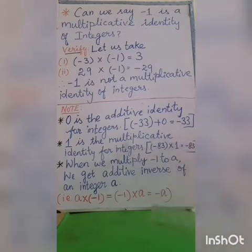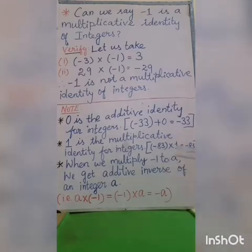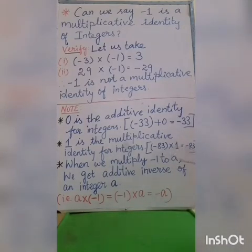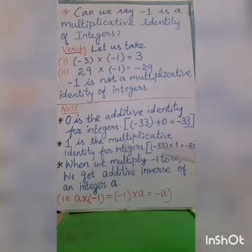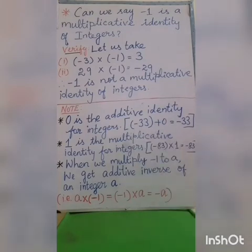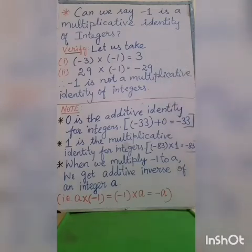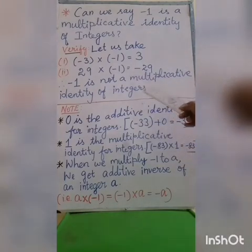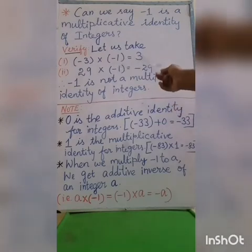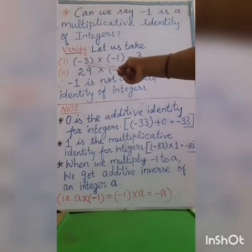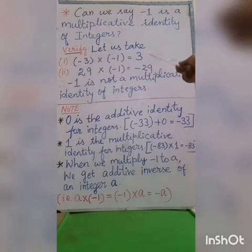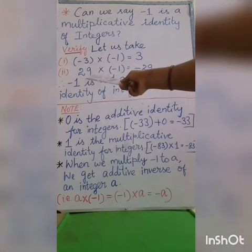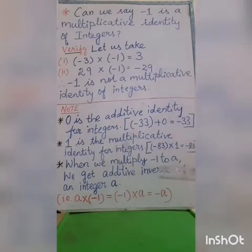In multiplicative identity, 1 is the multiplicative identity for integers. For example, minus 83 is an integer; multiply by 1, the same minus 83 is your answer. So in multiplication, 1 is the multiplicative identity. But minus 1 is not a multiplicative identity. For additive inverse: the additive inverse of minus 3 is plus 3, and the additive inverse of 29 is minus 29.